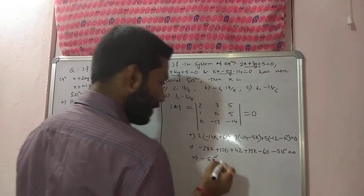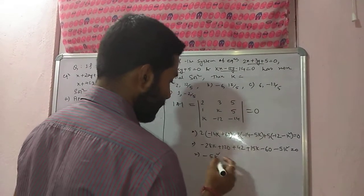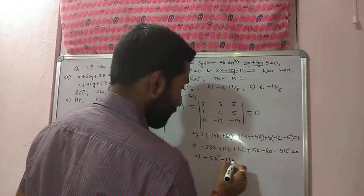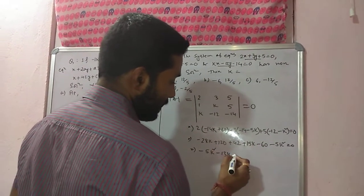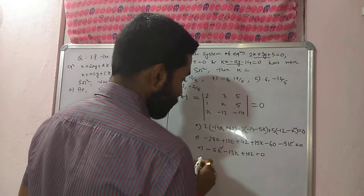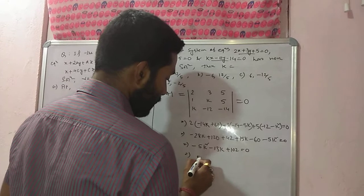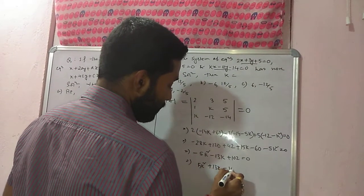We can write minus 5k square, 15k minus 13k, 120, 162 minus 60 is 102, plus 102. If I take minus common, this will be 5k square plus 13k minus 102.